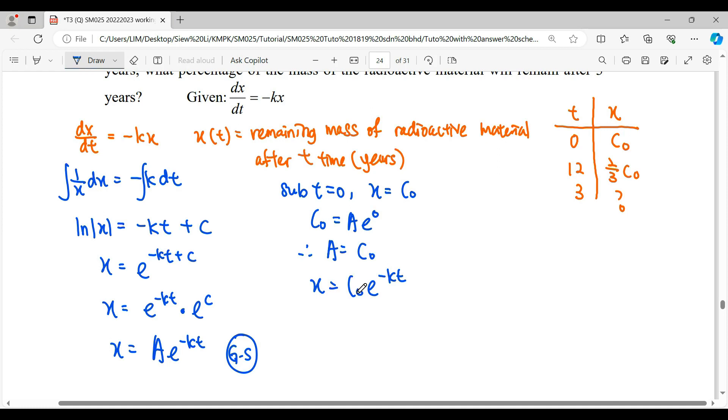Then we notice here, this is our constant, this is our variable. And then we need to find out what is our k by using the second information. When t equals 12, x equals 2 over 3 C₀. We substitute to the solution here.